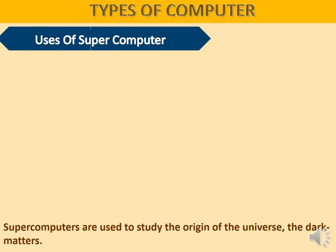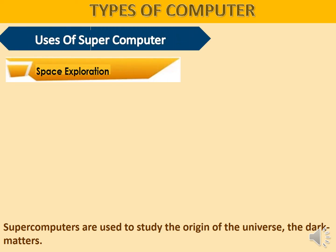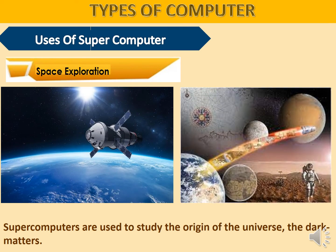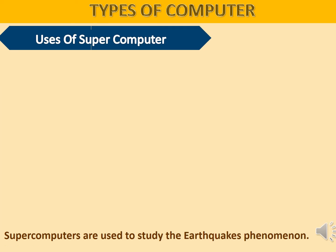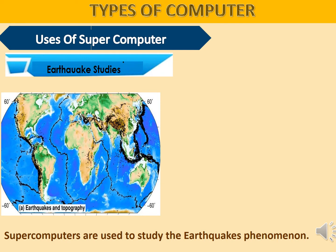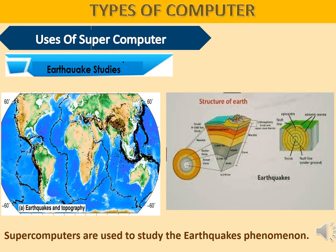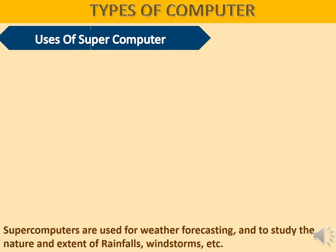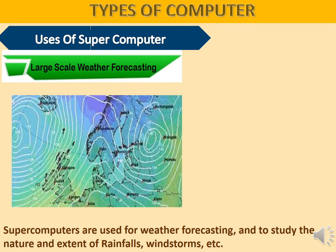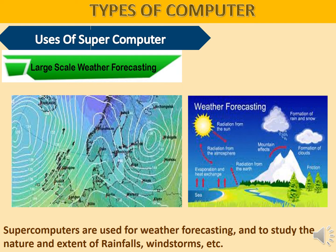Uses of supercomputers include space exploration — they are used to study the origin of the universe and dark matter. Supercomputers are also used in earthquake studies to study the earthquake phenomenon. Additionally, supercomputers are used for weather forecasting and to study the nature and extent of rainfalls, windstorms, and similar events.